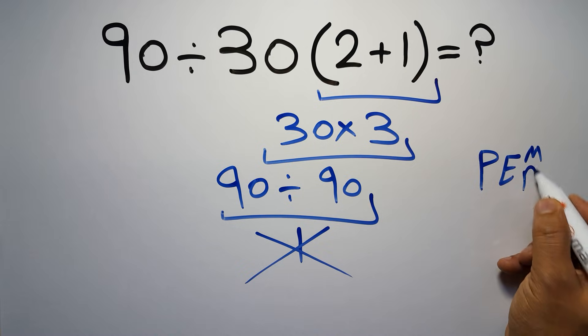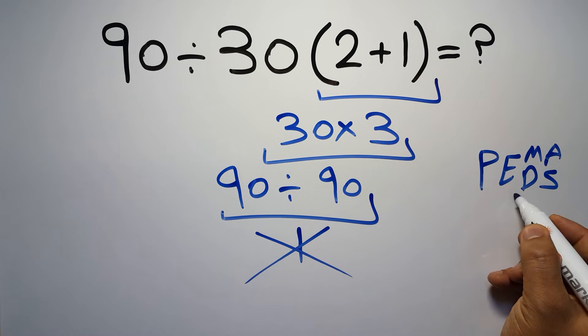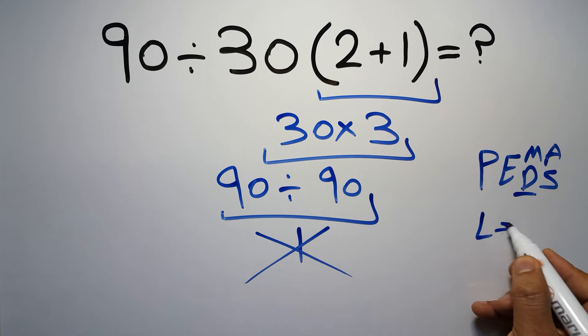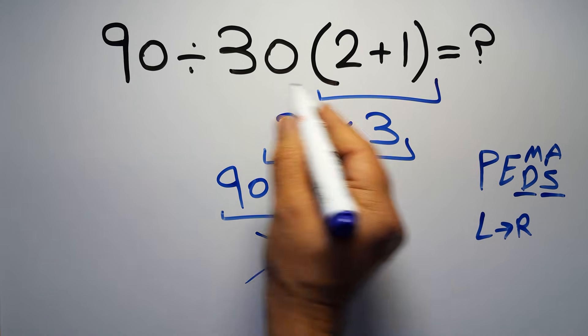exponents, then multiplication or division, and finally addition or subtraction. Remember that multiplication and division have equal priority and we have to work from left to right. The same applies to addition and subtraction.